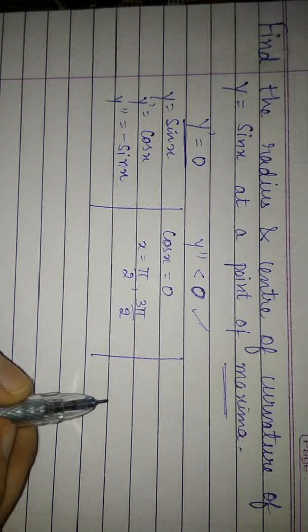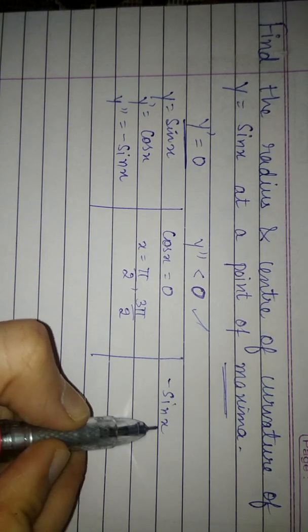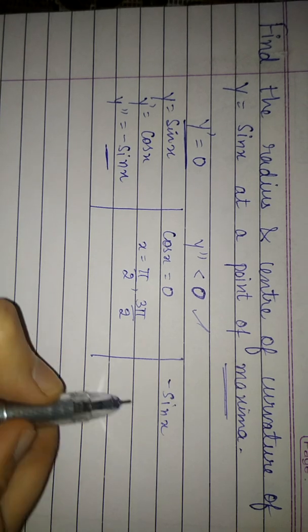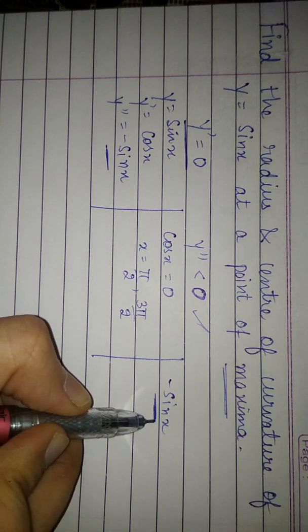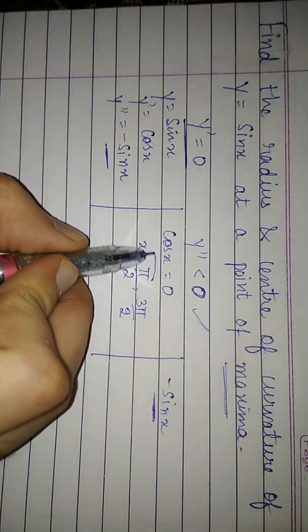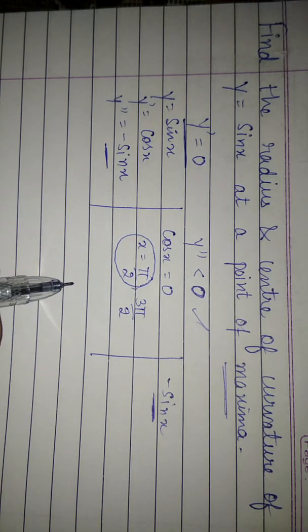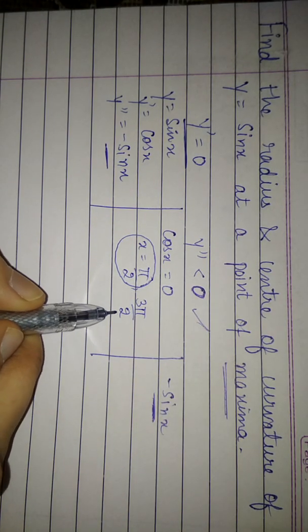So second derivative is minus sin x. So for this to be negative, we will only include x equals to π by 2. Because at x equals to 3π by 2,